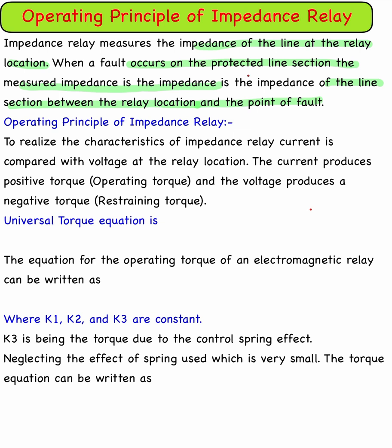The current is compared with the voltage at the relay location. Current produces a positive operating torque, and voltage produces a negative operating torque. The positive operating torque is the operating torque, while the negative torque is the restraining torque.